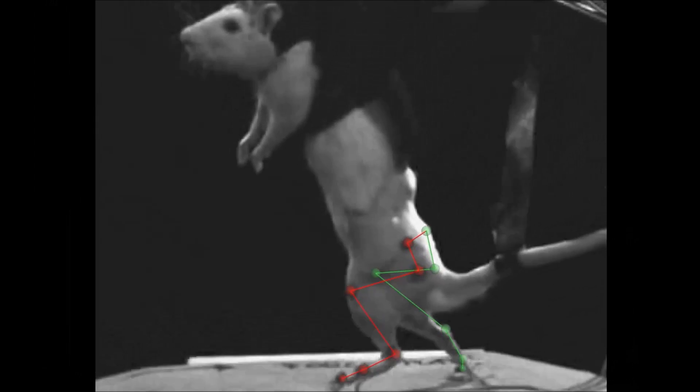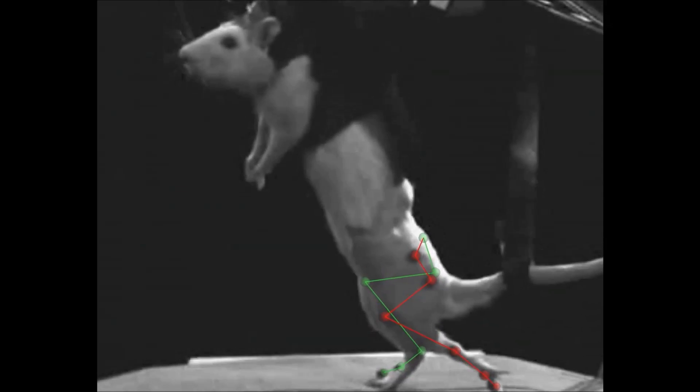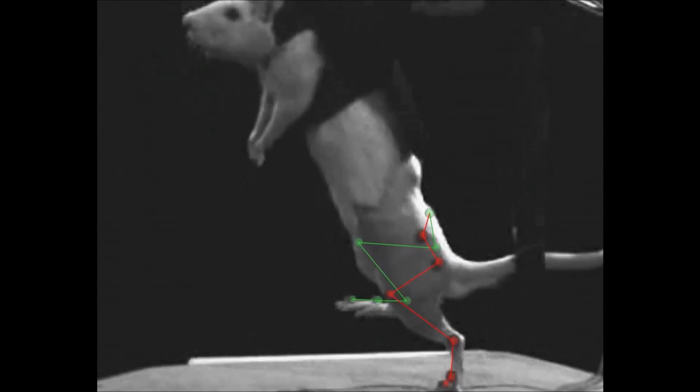The electrochemical neuroprosthesis restored continuous coordinated locomotion in the paralyzed rats.